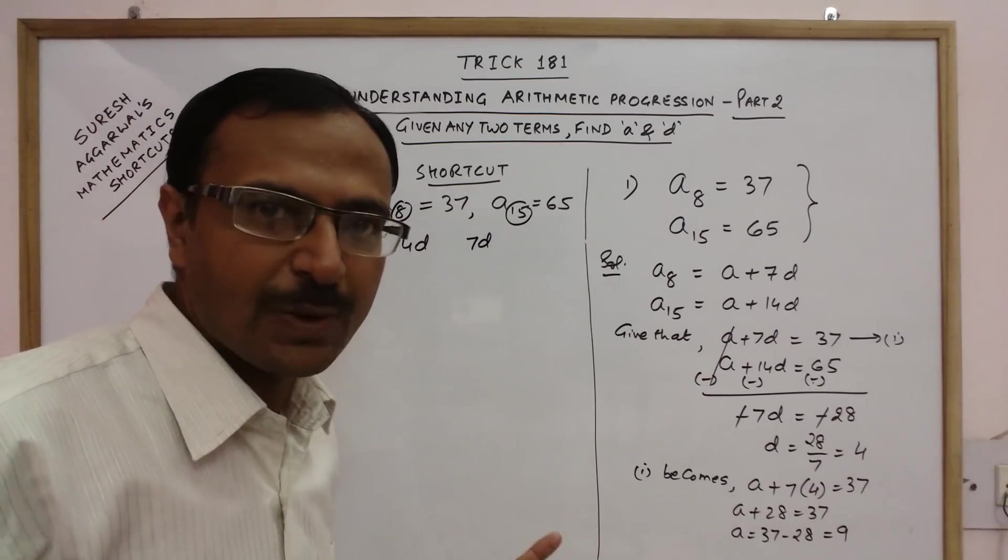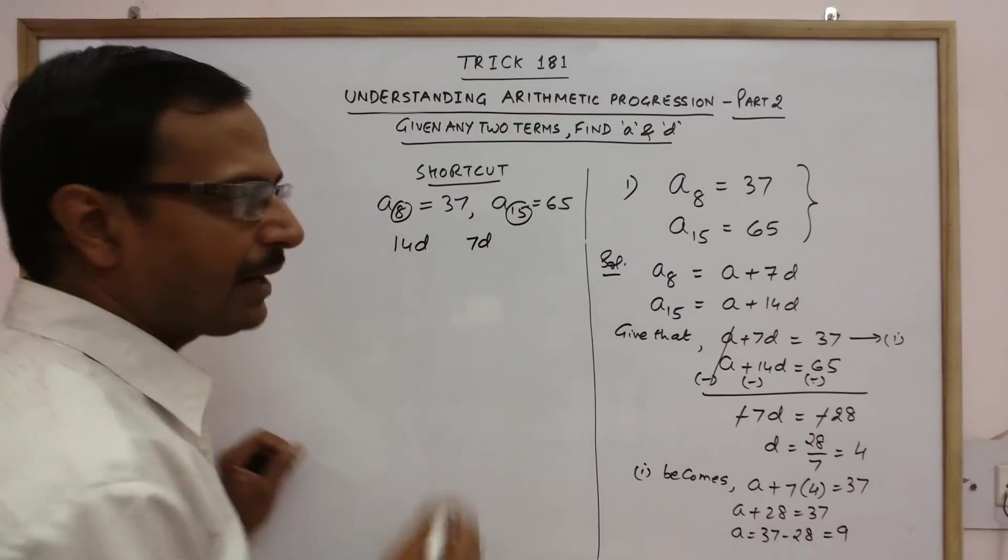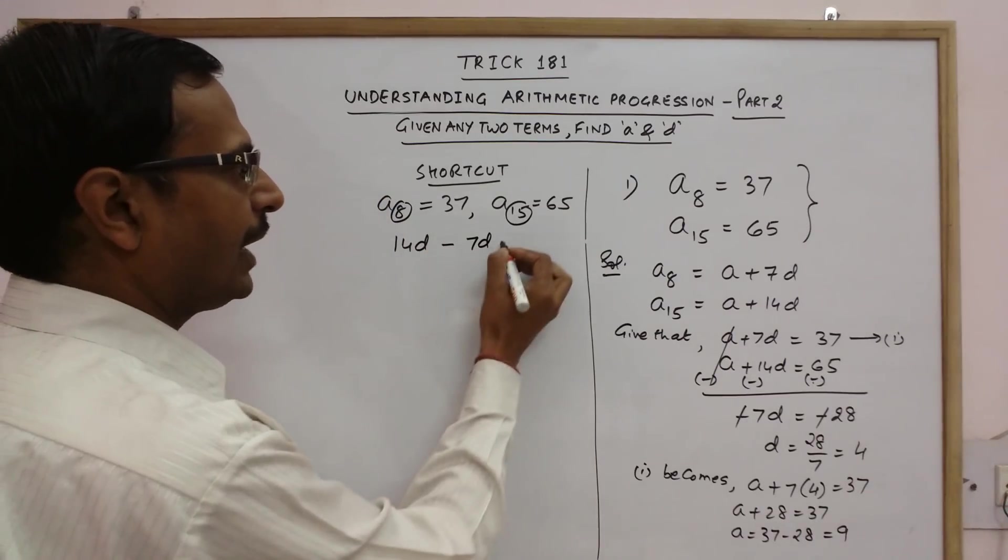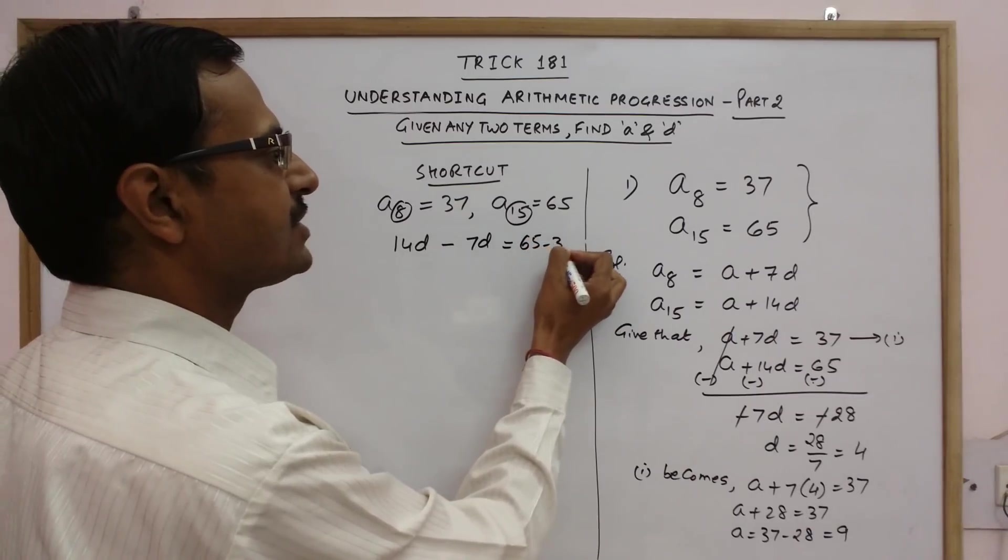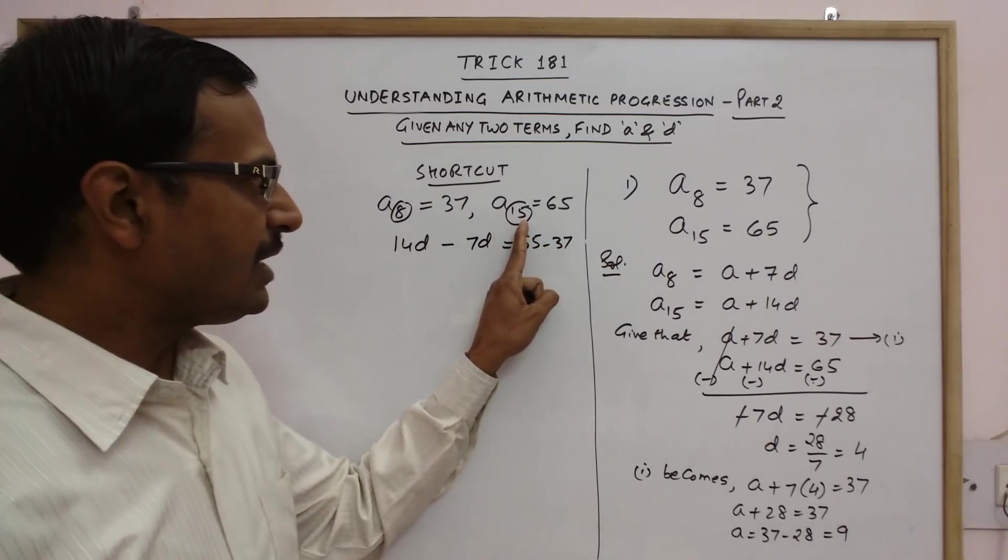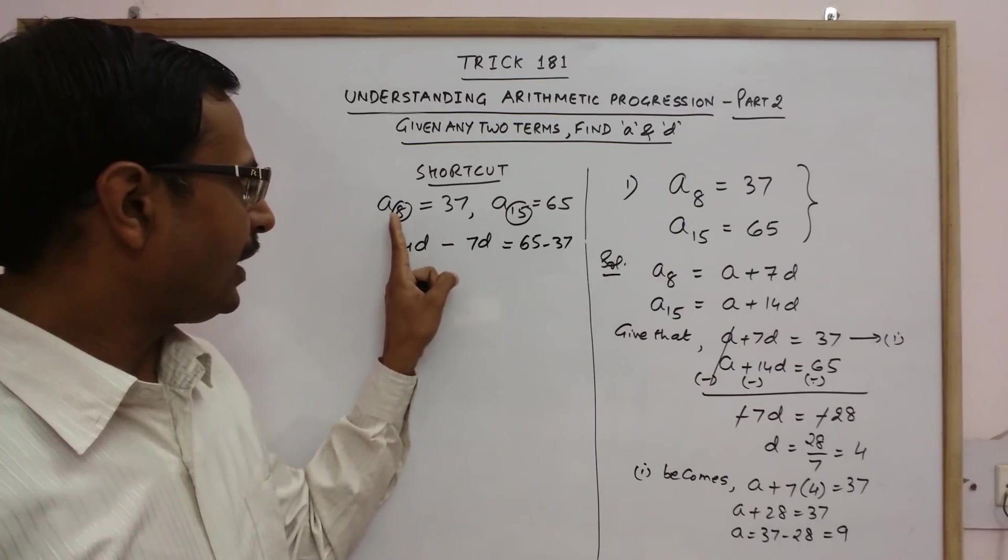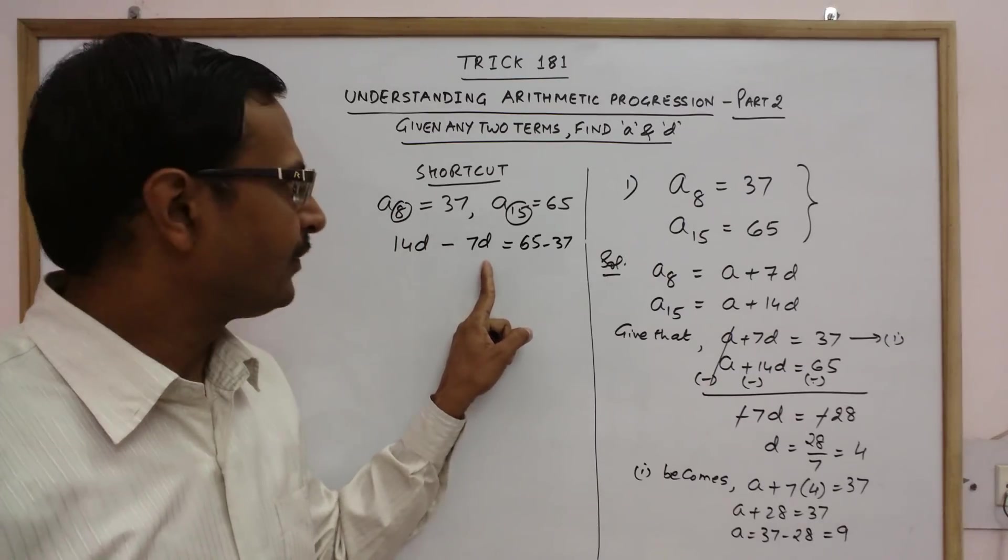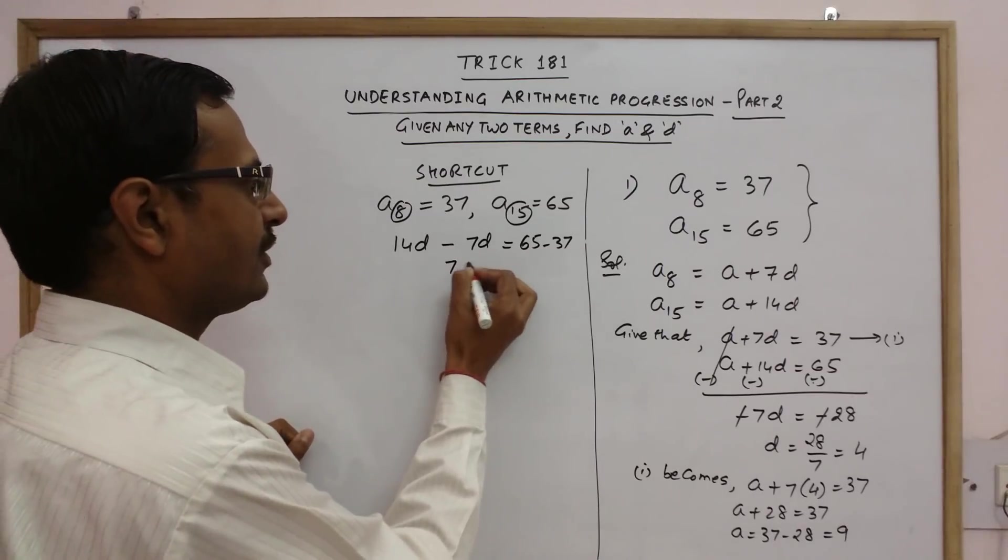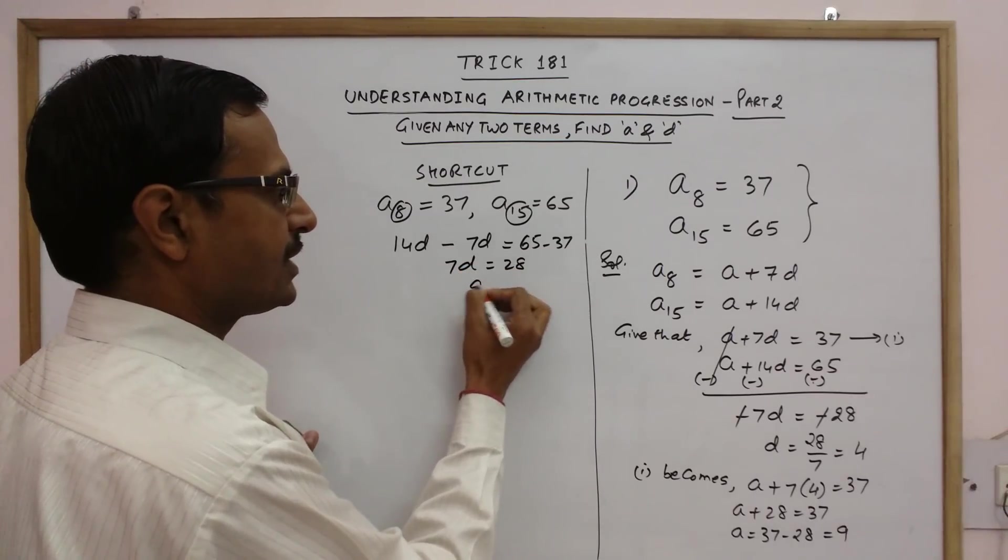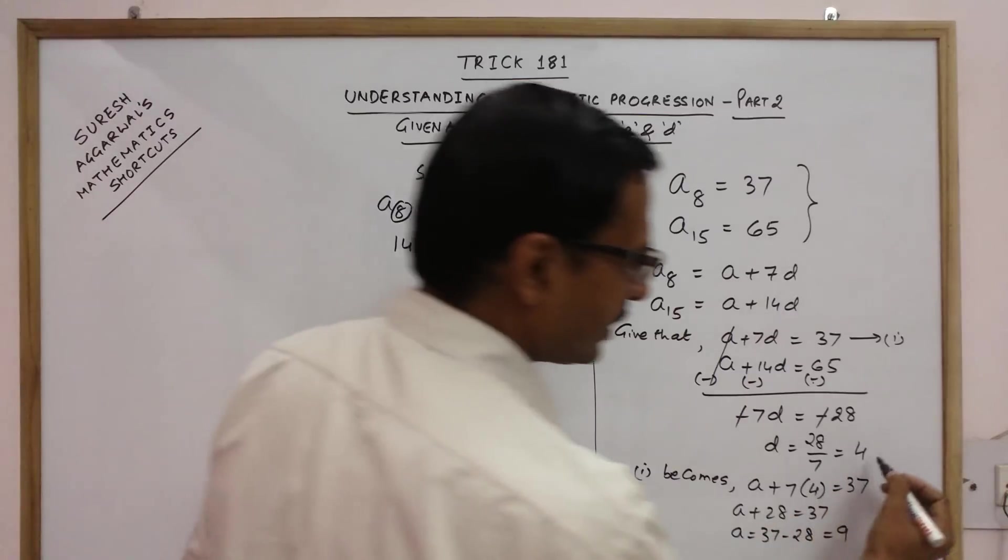So now see this is 15 so I will write 14D. This is 8 so I will write 7D. I have reduced them each by 1. And then I will take the difference and on the right side I will take the difference of the right hand sides. So 15D becomes 14D, 8 becomes 7D, and 65 minus 37 as it is. Now this is your first step. Your answer is ready. D obtained is 4. So which is solved here in just 3 or 4 seconds.